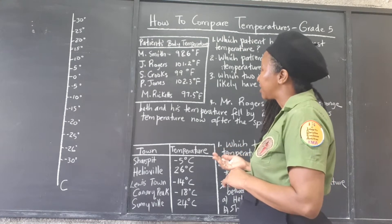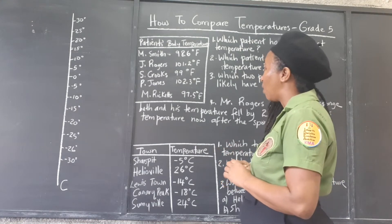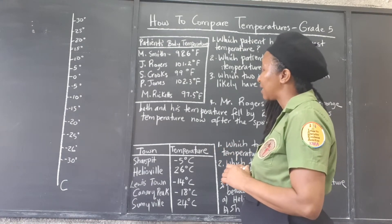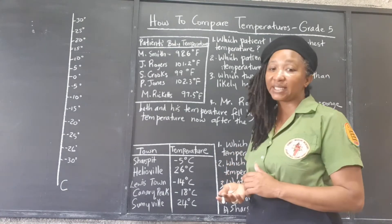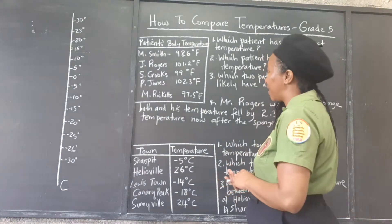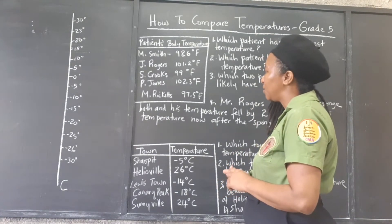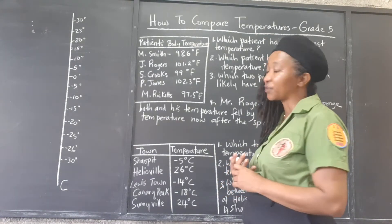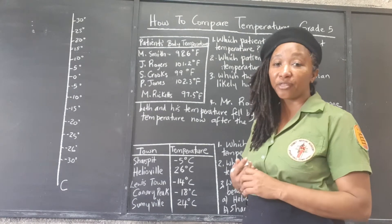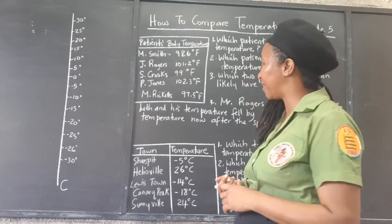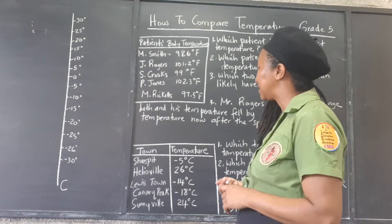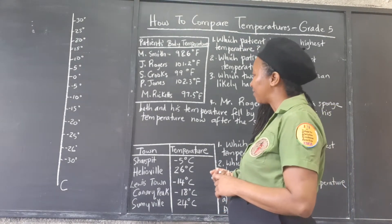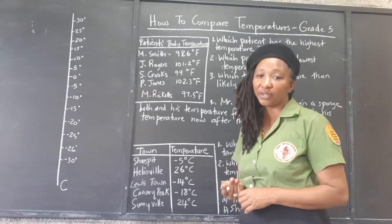J. Rogers has 101.2 degrees Fahrenheit. S. Crooks has 99 degrees Fahrenheit. P. Jones has 102.3 degrees Fahrenheit. And M. Ricketts has 97.5 degrees Fahrenheit.